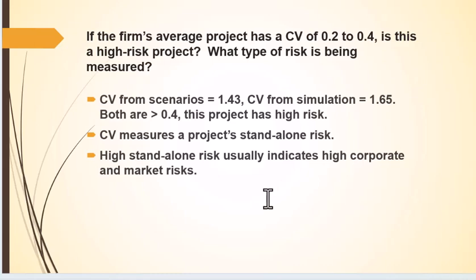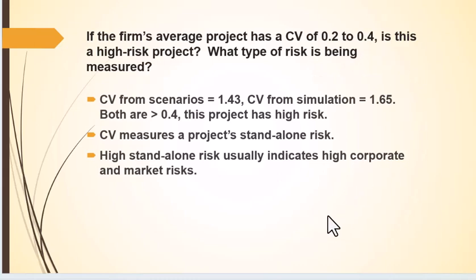If we can use the coefficient of variation, this is one of the more popular ways to adjust the cost of capital. If the coefficient varies between 0.2 and 0.4, what does that tell us? From the scenarios discussed, the coefficient of variation is 1.4 from scenarios and 1.65 from simulation.